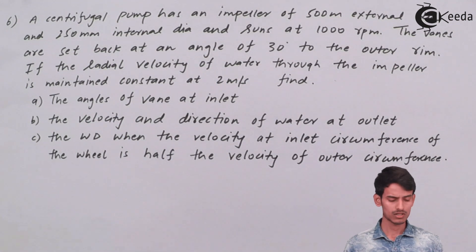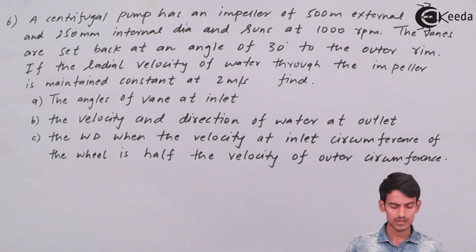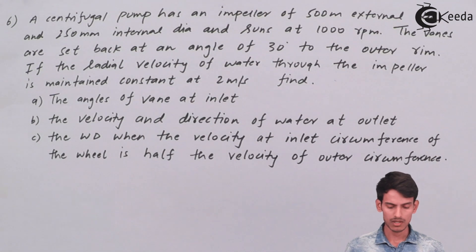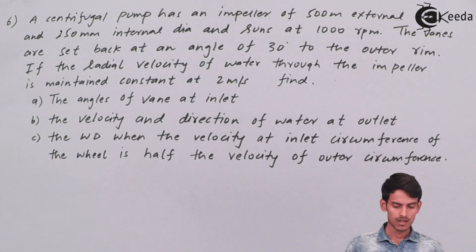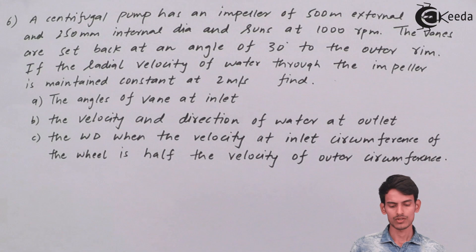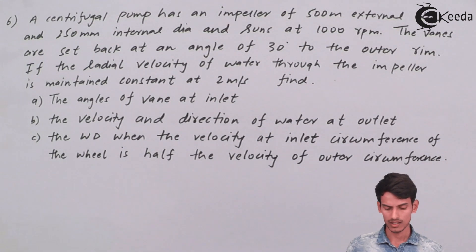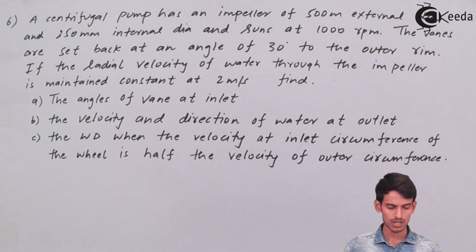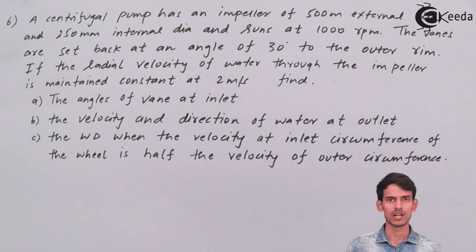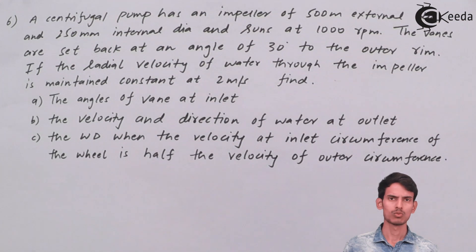It is a bit difficult question. Let me read it: A centrifugal pump has an impeller of 500 mm external diameter and 250 mm internal diameter and runs at 1000 rpm. The vanes are set back at an angle of 30 degrees to the outer rim — so the value of phi is given at the outer side. The radial velocity of water through the impeller is maintained constant at 2 meters per second — so it is constant at both the inlet and outlet side.